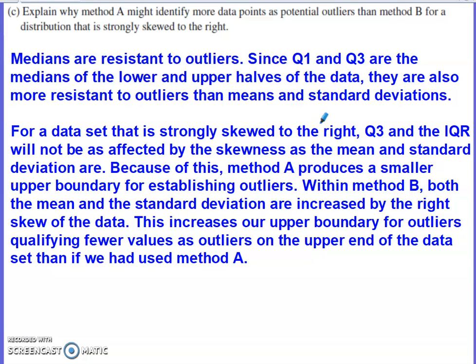But the mean and the standard deviation, they are not resistant to skewness and outliers. The mean is driven higher, the standard deviation is driven higher, that gives us a higher boundary for outliers on the upper end qualifying few values on the upper end of the data set as outliers. So I know I didn't read what I have typed here word for word, but you'd want to say something along those lines in order to satisfy the requirements for part C.